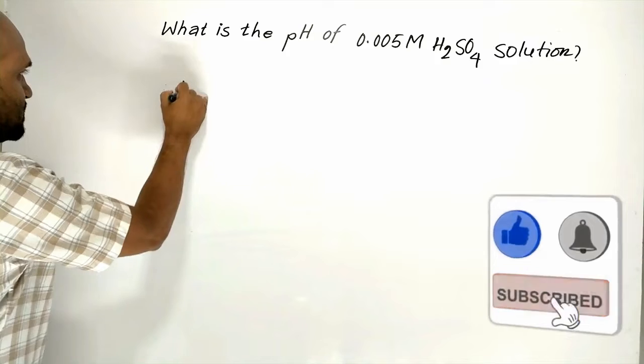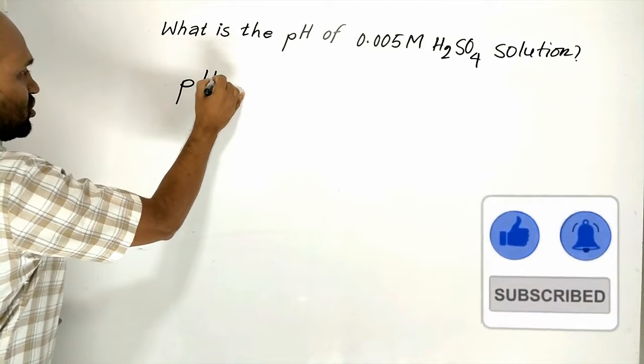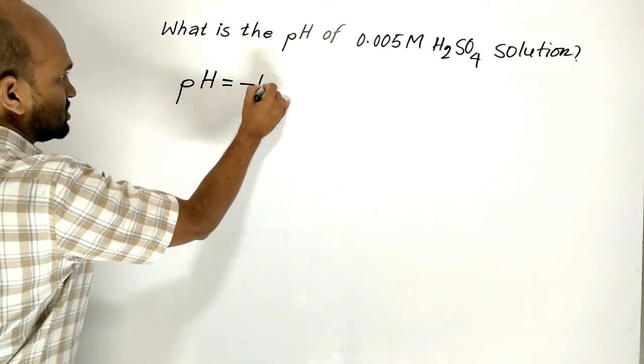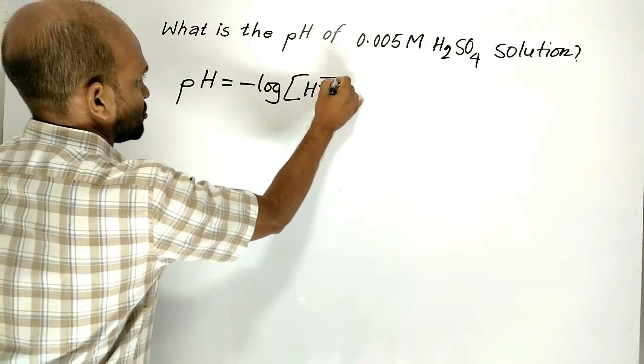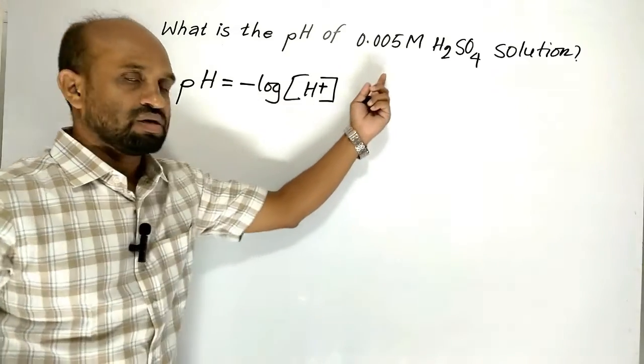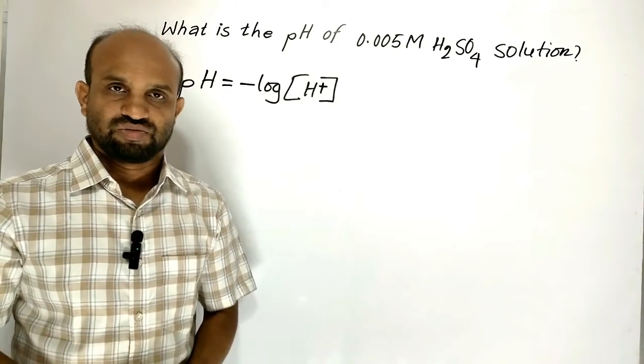We know pH for acidic solution is minus log of the concentration of hydrogen ion. Here, the concentration of sulfuric acid is given.